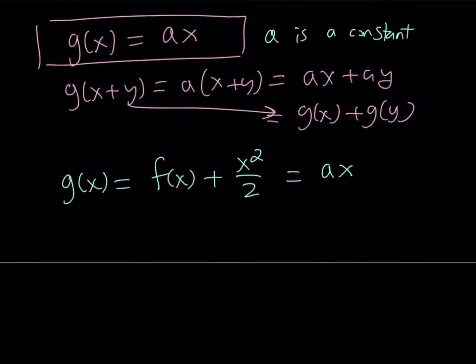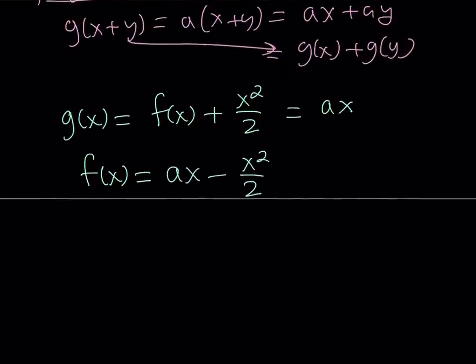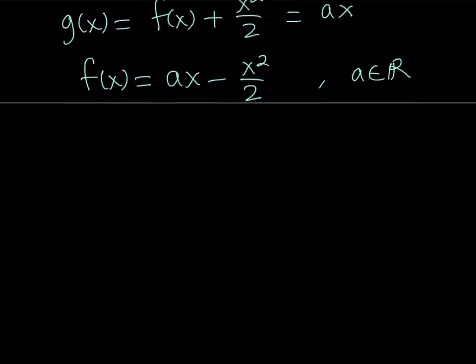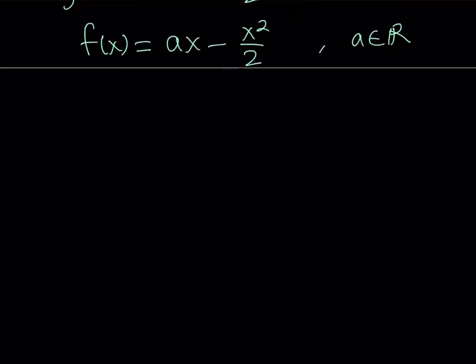Alright, great. So now, since our goal was to solve for f(x), from here, we can isolate f(x). And subtracting x²/2 from both sides is going to give us the answer, ax - x²/2. So basically, if a is a constant, an element of the real numbers, then f(x) is going to be in this form.